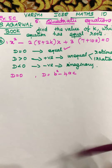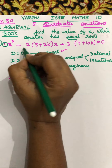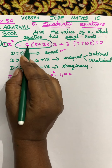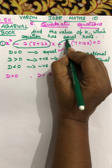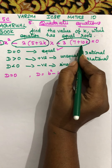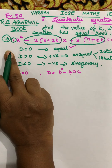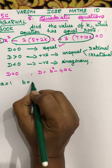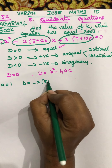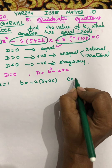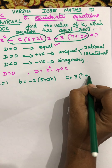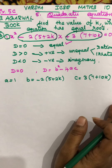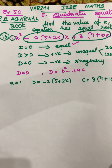What is b? This is a — the coefficient — this is a, and this is b. For b, it includes the sign also: minus 2(5 + 2k). C means plus 3, so this is your c. So you can write: a = 1, b = −2(5 + 2k), and c = 3(7 + 10k). So these are the values of a, b, and c.